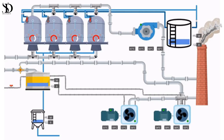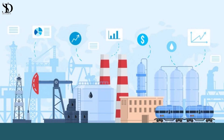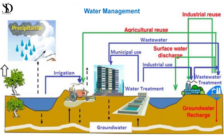Applications of flow measurement. Industrial processes: flow measurement is integral to chemical processing, food and beverage production, and HVAC systems. Oil and gas: in the petroleum industry, precise flow measurement is crucial for production, transportation, and refining processes. Water management: monitoring water flow in irrigation, municipal water supply, and wastewater treatment is essential for conservation and efficient resource management.